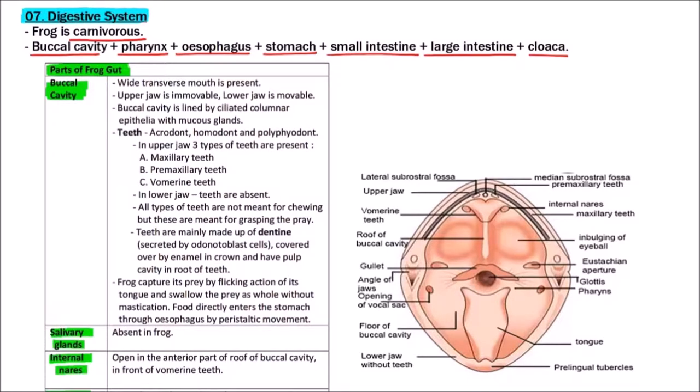First, we'll discuss the buccal cavity. Buccal cavity has a wide transverse mouth at its proximal end. Upper jaws are immovable while the lower jaws are movable. Buccal cavity is lined by ciliated columnar epithelia with mucus glands.